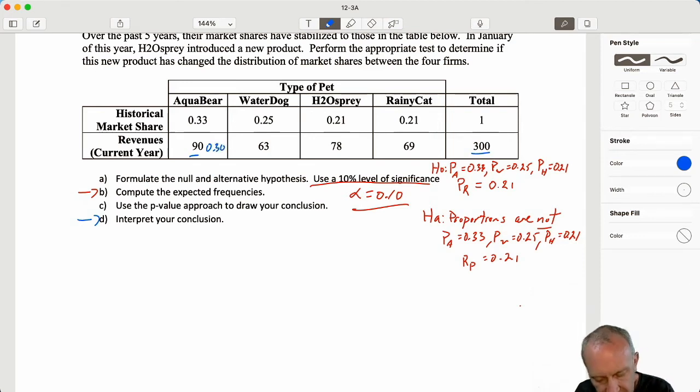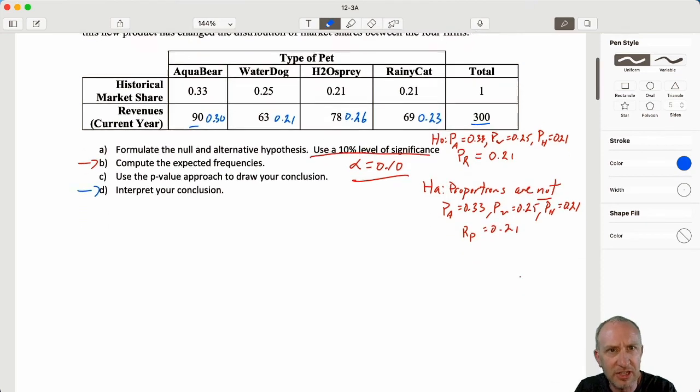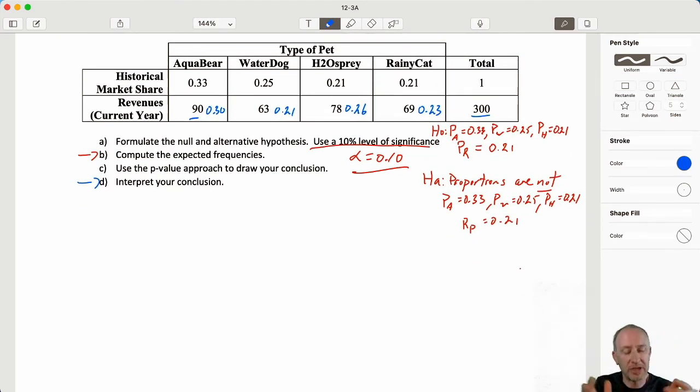So that gives me here a point estimate of 0.3. 63 out of 300, this is 0.21. 78 of 300 is 0.26. 69 of 300 is 0.23. So even looking at these numbers, it's maybe straightforward to see how things have changed. We're going to draw a bar chart anyways just so that we can really see it. And it's not going to be precise. Again, this is just to give us some idea of how those proportions have been influenced. So first, let's look at those historical values.